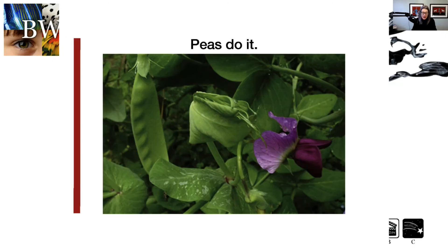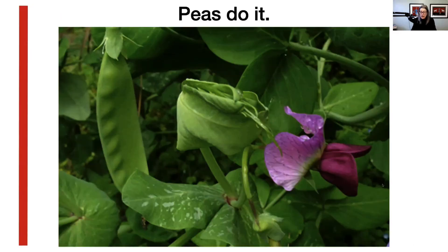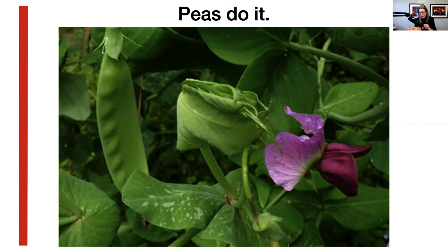Amazing work by Gagliano in Australia and others around the world demonstrated that garden peas learn, using our definition of behavior change due to experience. This was a Pavlovian or classical kind of study where they paired a fan's airflow with light. We know that plants move toward light — called phototaxis. By pairing the airflow from the fan, which predicted where the light would be, after repeated pairings, when they delivered just the fan flow, the peas moved in the direction of the fan. It is clearly a learning planet.